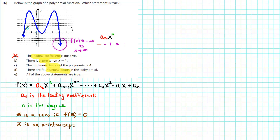The x-intercepts are at negative two, zero, one, and three. So that means that the zeros of this function are negative two, zero, one, and three.